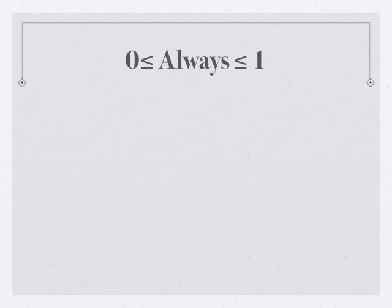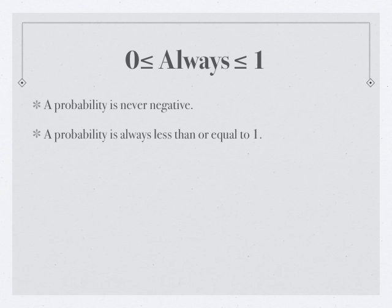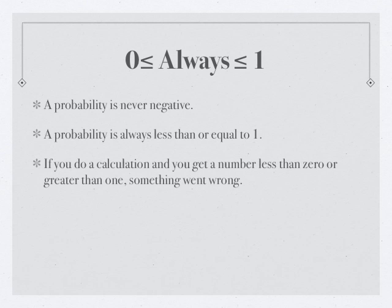Think about probability. A probability is always greater than or equal to zero, less than or equal to one. It can be zero. It can be one. But it's always in that range — it's never negative, always less than or equal to one. If the probability of something is zero, it means it will never happen. If the probability is one, it means it will always happen. Here's the big hint: if you do a calculation and get a number less than zero or greater than one, something went wrong.